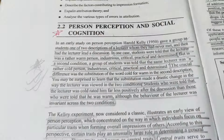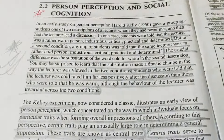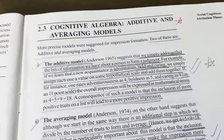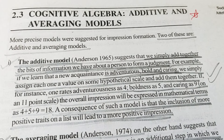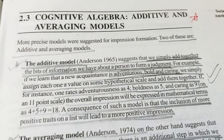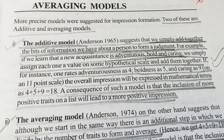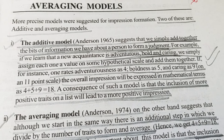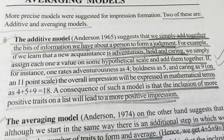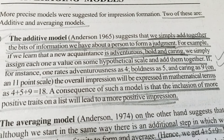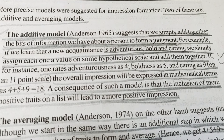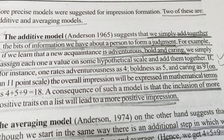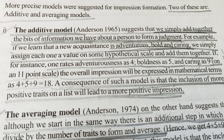This topic is important — it has a star, so prepare it for the exam. Second is Cognitive Algebra: Additive and Averaging Models. There are two models. The first is the Additive Model, given by Anderson in 1965.